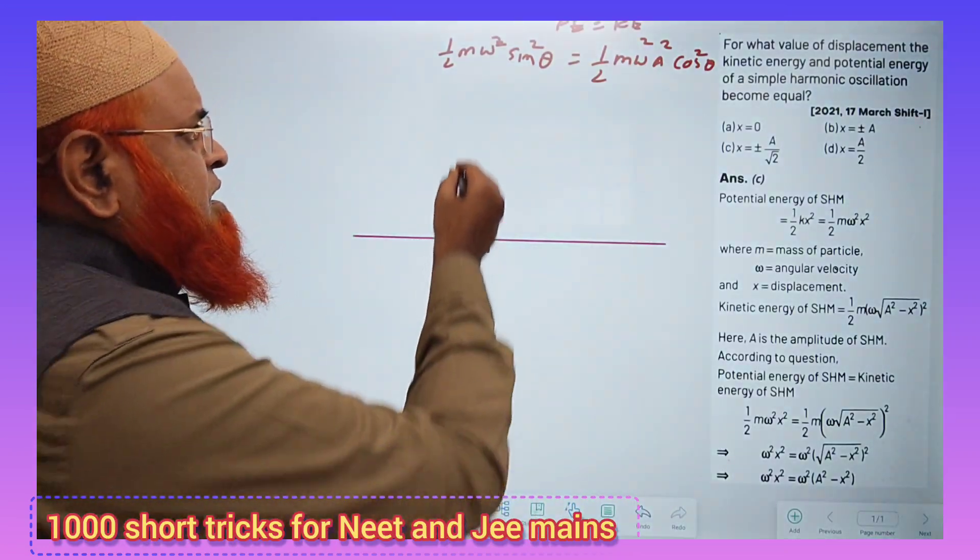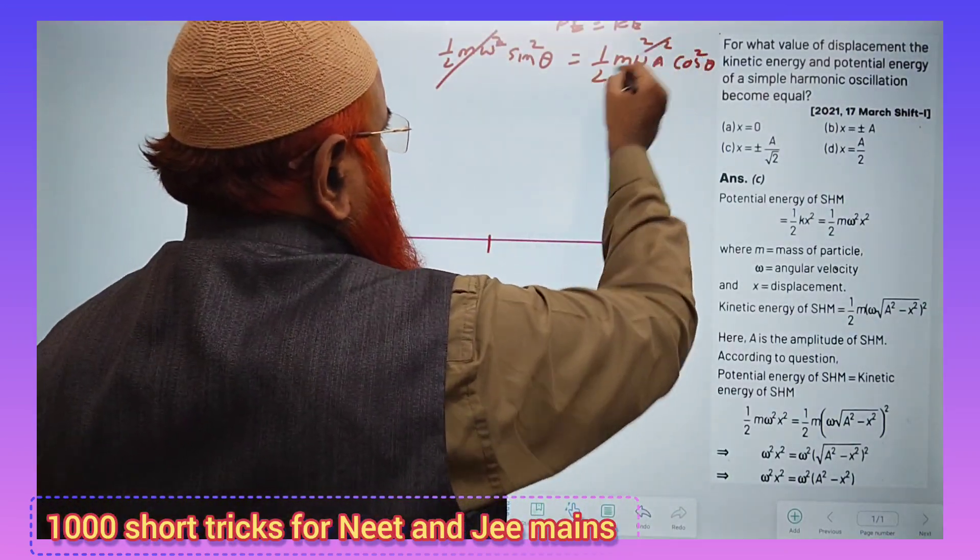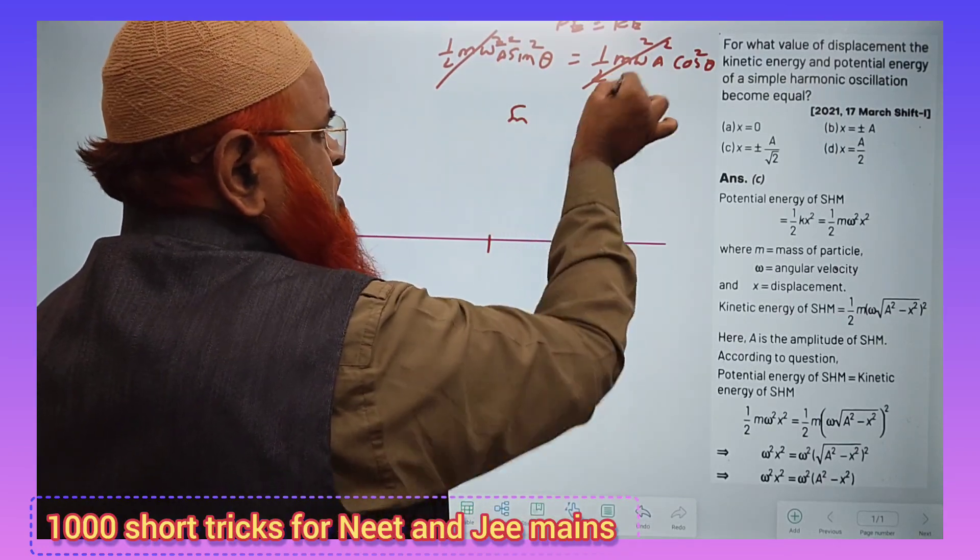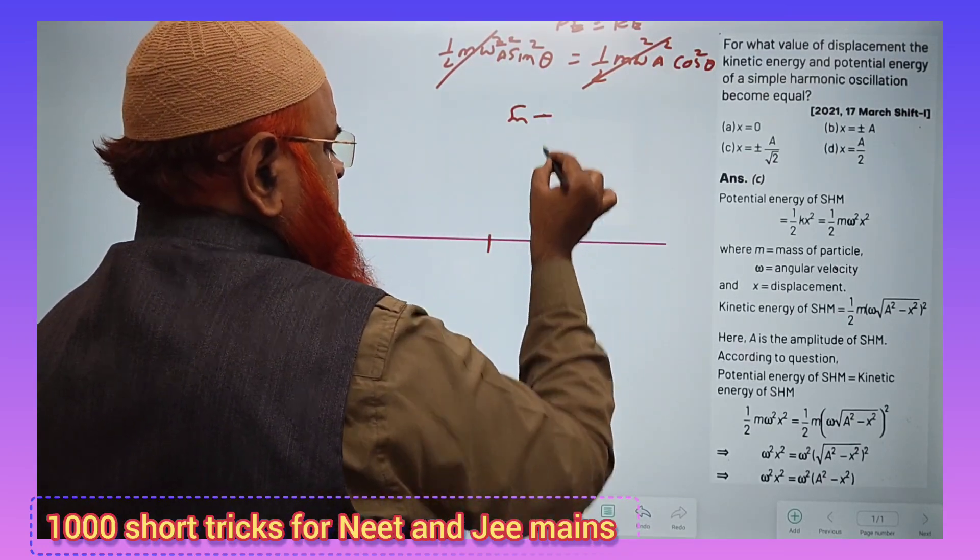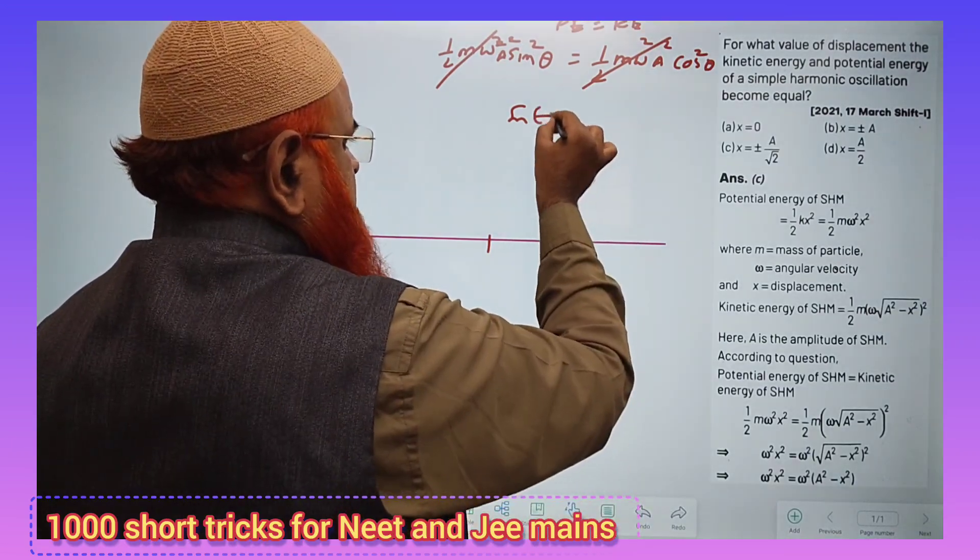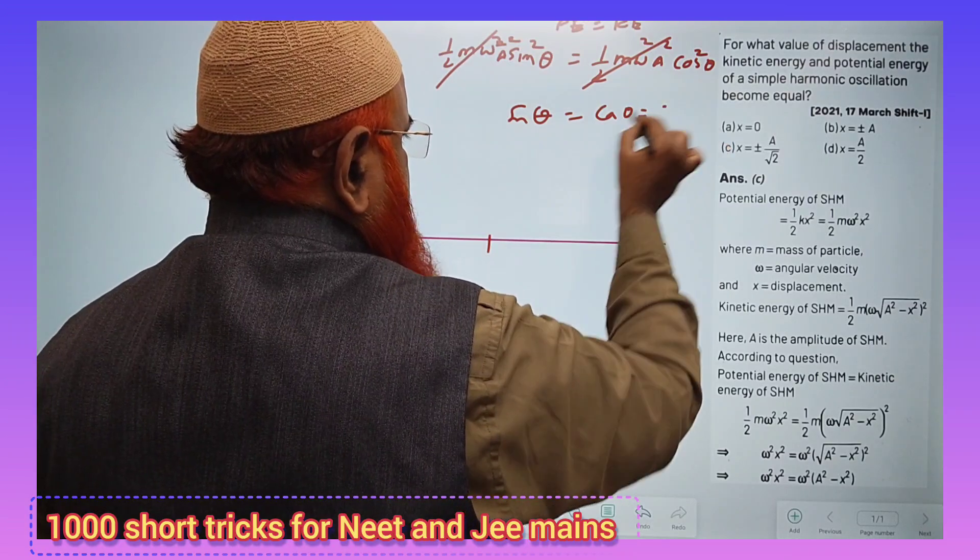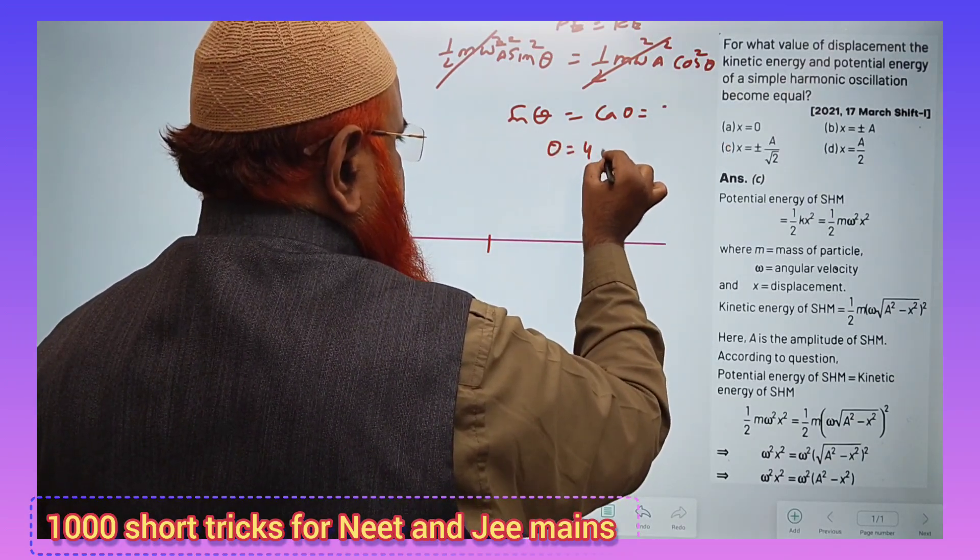You can see here, half m omega square, half m omega square gets cancelled, omega square a square gets cancelled, then what is left now? Sine square theta equals cos square theta, that is nothing but sin theta equals cos theta. And this is possible only when theta equals 45 degrees.